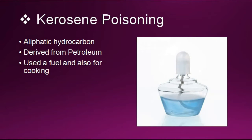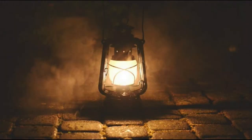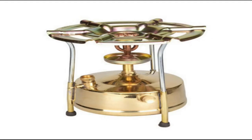Here you can see a picture of kerosene oil. It appears coloured because of marketing purposes, and this colour is also used for prevention of any accidental poisoning. It is used as a fuel and also for cooking in a stove and also used in lamps. Here you can see a picture of a lamp and a stove.